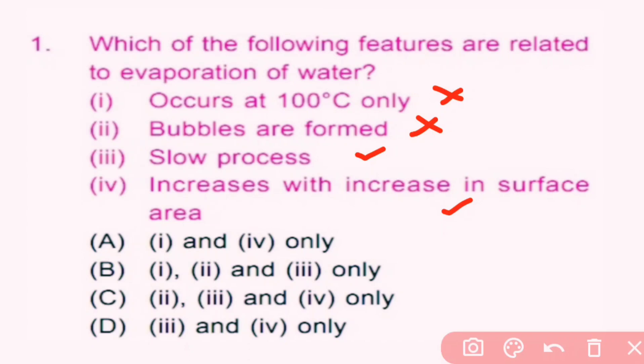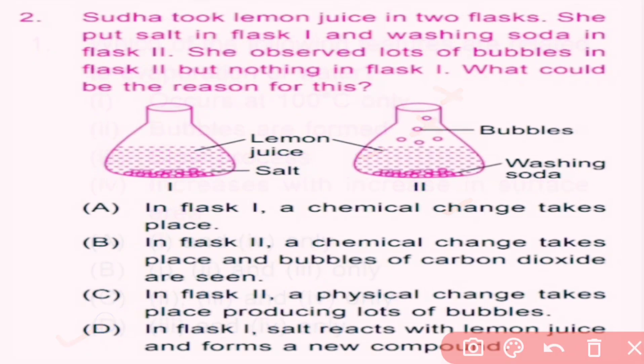Question number two: Sudha took lemon juice in two flasks. She put salt in flask one and washing soda in flask two. She observed lots of bubbles in flask two but nothing in flask one. What could be the reason for this? In flask one she took lemon juice and salt — salt is dissolved in lemon juice.